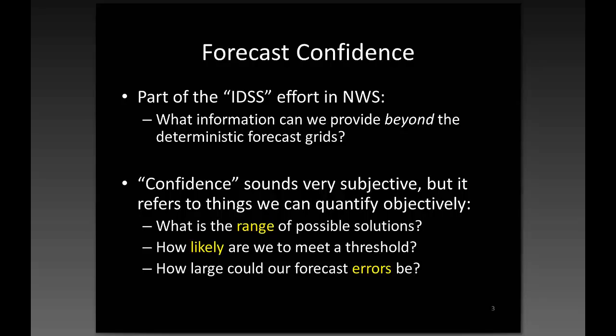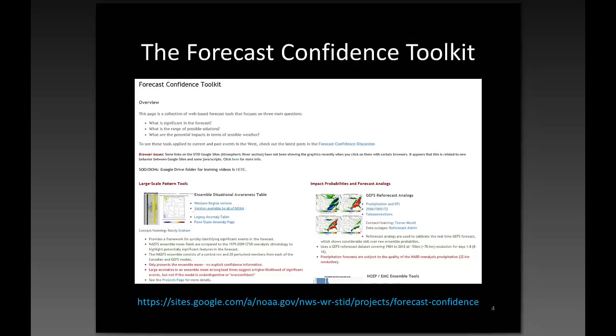So what is forecast confidence? It's part of doing good DSS. What information can we provide beyond just the deterministic forecast grids? Confidence sounds very subjective, but it refers to things we can quantify objectively: what is a range of possible solutions, how likely are we to meet a threshold, and how large could our forecast errors be? Given good interpretation of the model information, we can eventually communicate better to emergency managers, the public, and whatever our customers might be.